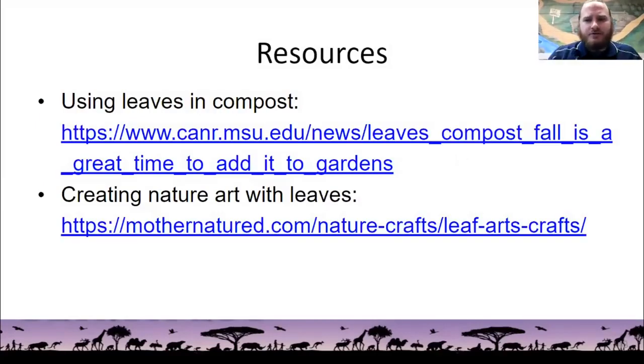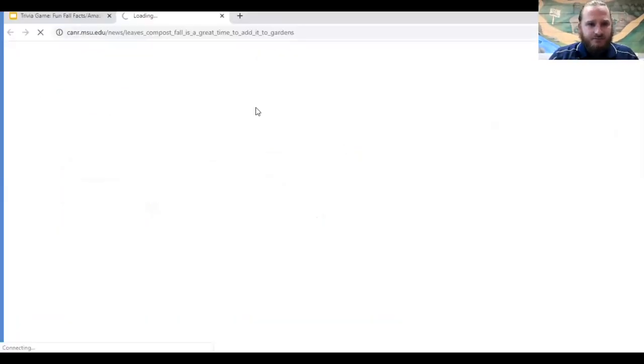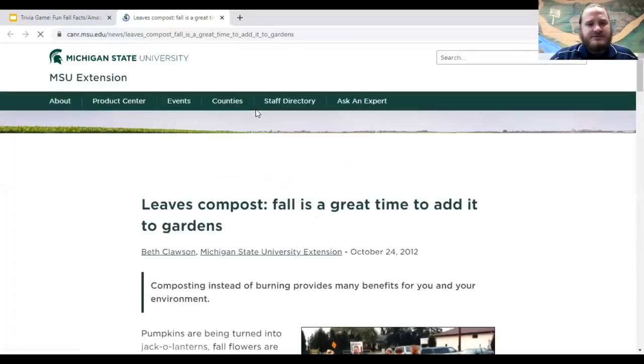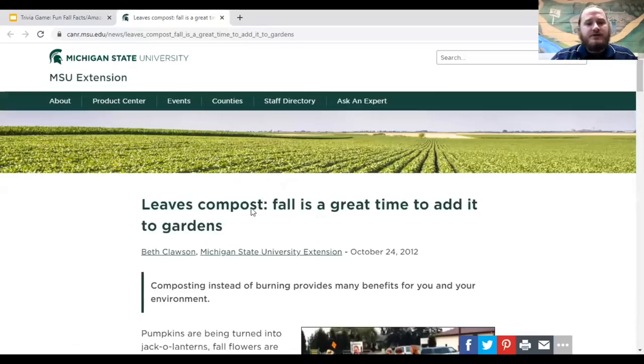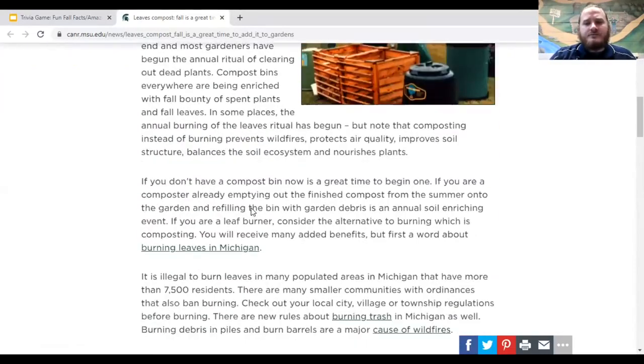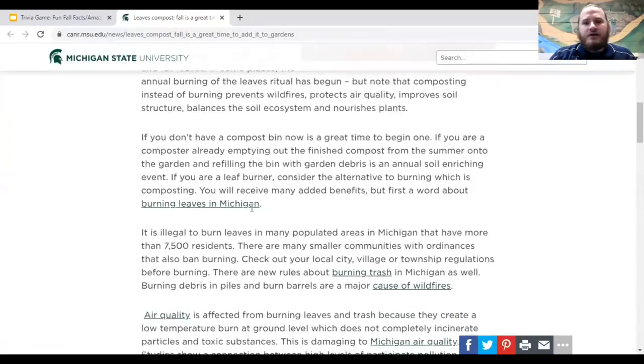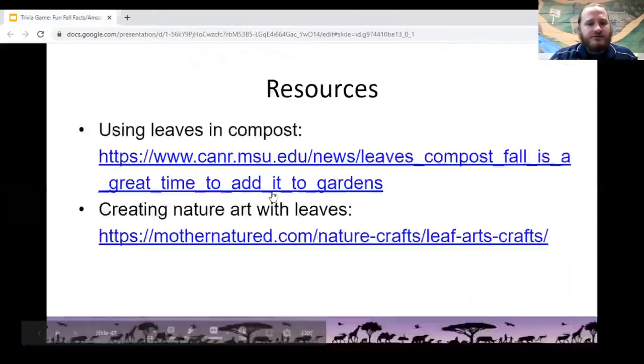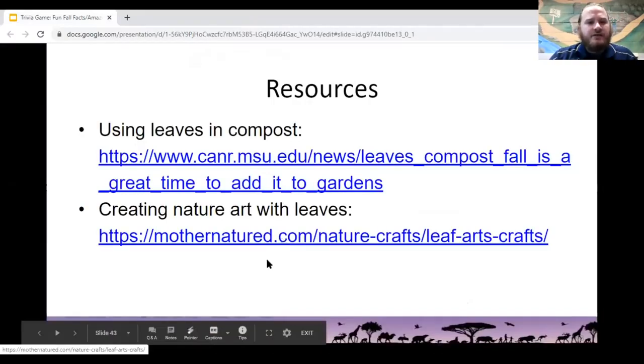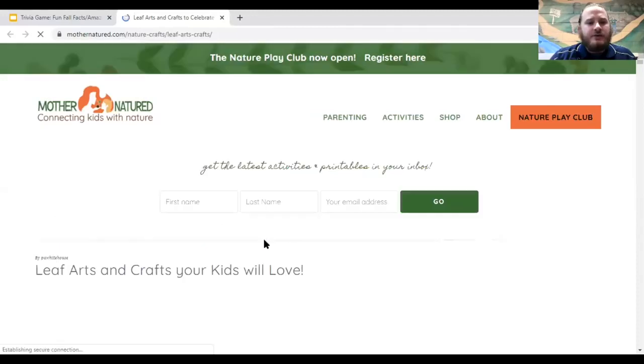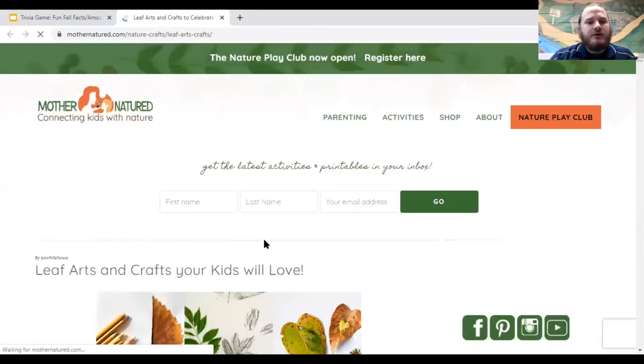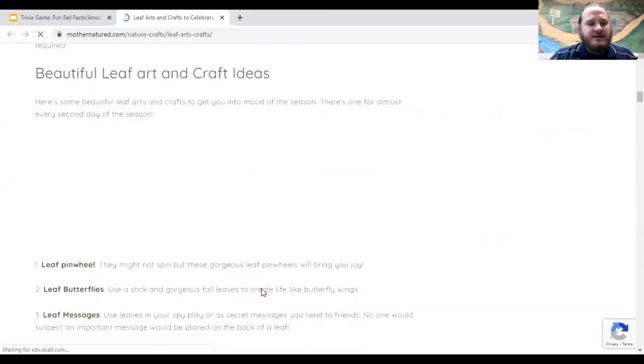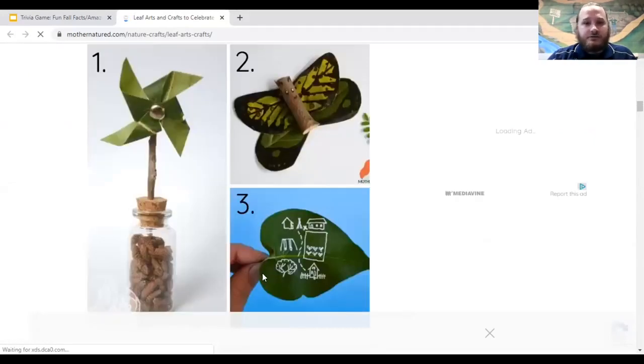So if you'd like to try one of those methods out but don't quite know how to, here are a couple of resources. This one is from MSU Extension. And it lists some different steps you can take to use leaves as compost, as well as why that's an important thing to do, both in terms of what it can provide for your garden, as well as how it helps conserve this resource. Another resource is to create nature art with leaves. And there are a lot of different things you can do with leaves. I do enjoy this website because I think that it does a good job of showing some photographs of different ideas. For example, you can make a leaf pinwheel, leaf butterflies, and more. So feel free to check out that resource as well.